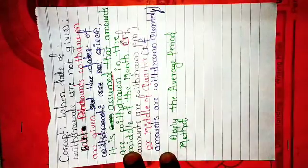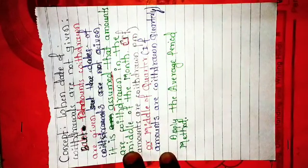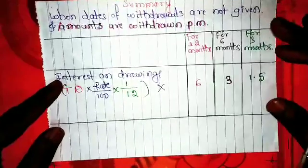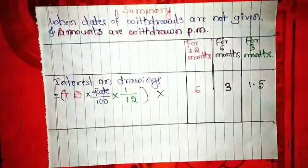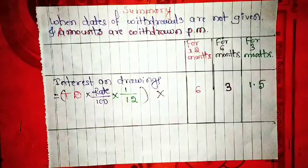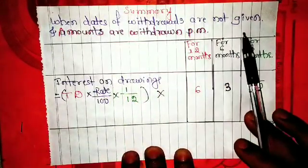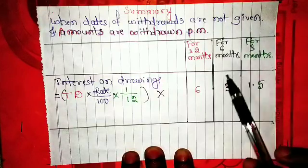The concept is: date of drawing is not given, amount of drawings is given — it may be on a per month or quarterly basis. If given on a per month basis, assume amounts are withdrawn in the middle of each month. If amounts are withdrawn on a quarterly basis, assume amounts are withdrawn in the middle of each quarter. In such cases we have to use these formulas and apply them. In shortcut, we can summarize and memorize it this way.